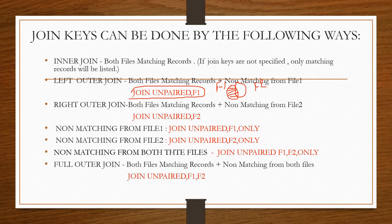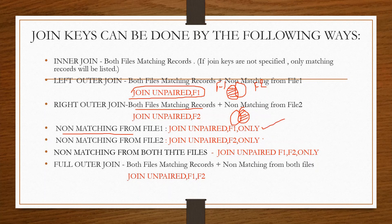Right outer join uses JOIN UNPAIRED with both files - matching records and non-matching records from file two. Non-matching records from file one are handled separately. For non-matching records from both files, you use JOIN UNPAIRED F1,F2 ONLY - here ONLY means non-matching records. Full outer join is JOIN UNPAIRED F1,F2 combined.